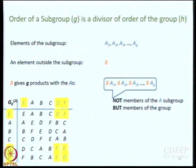So what has happened? Just for B, how many elements have you generated? g more. So the total is 2g. For each element outside the subgroup you generate g more elements. So finally, for a finite group, the total has to be something like Kg or KG — that is the order. The order of the group has to be KG where K is an integer, because every element outside the subgroup generates g elements by multiplication. So the total number has to be KG, meaning G is a divisor of H.